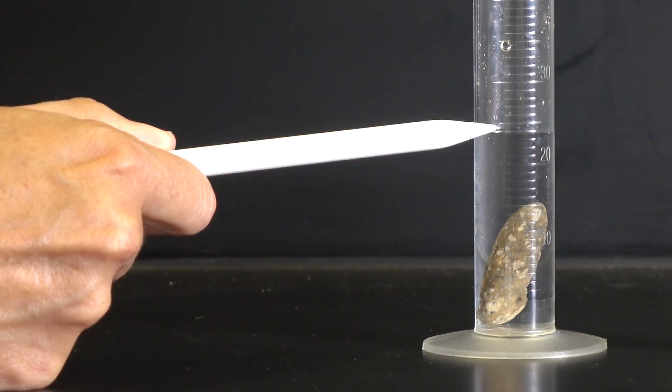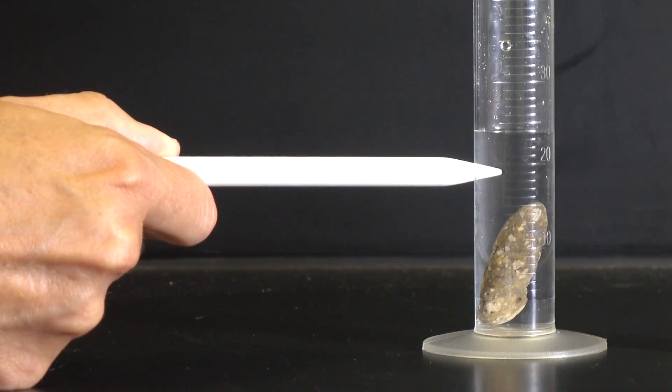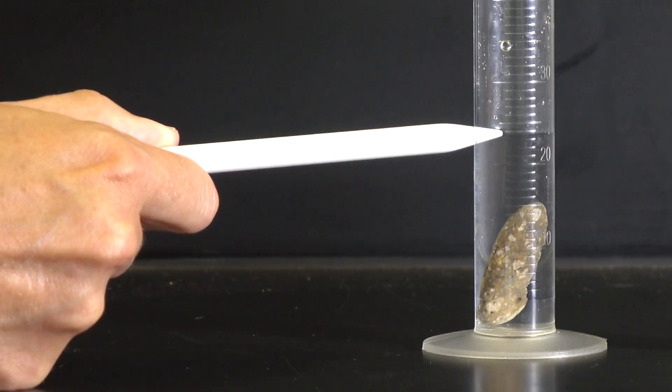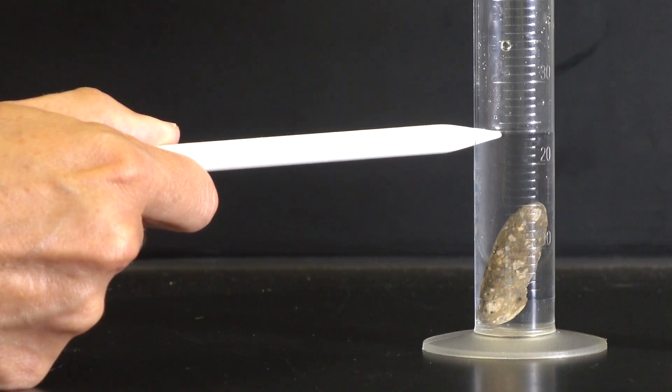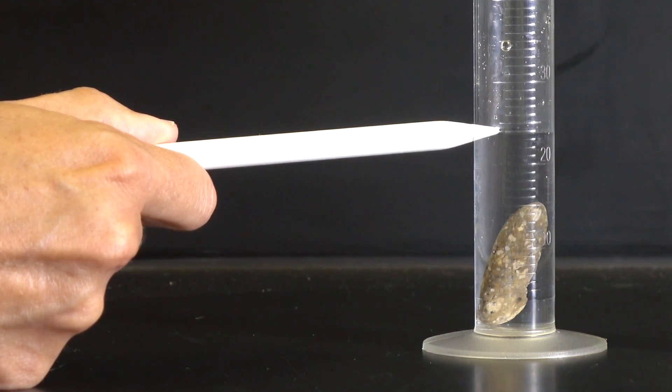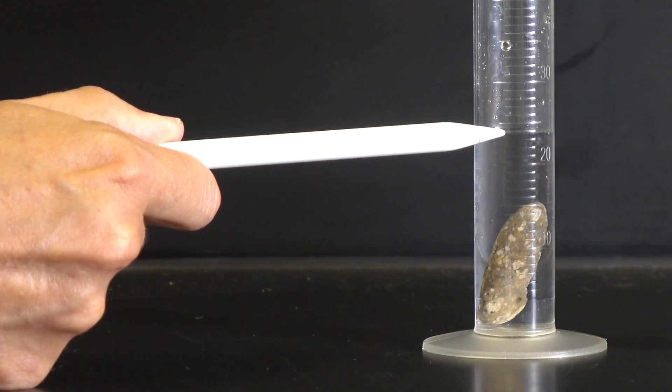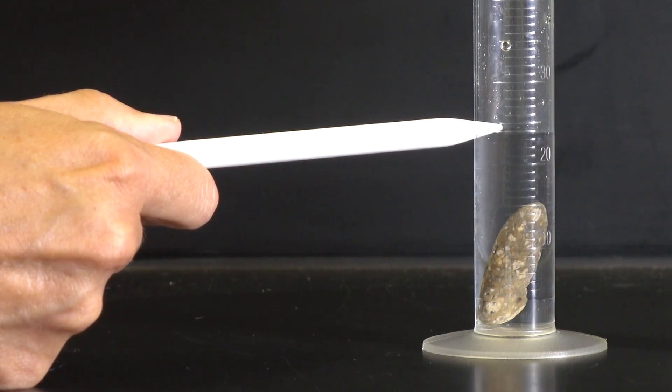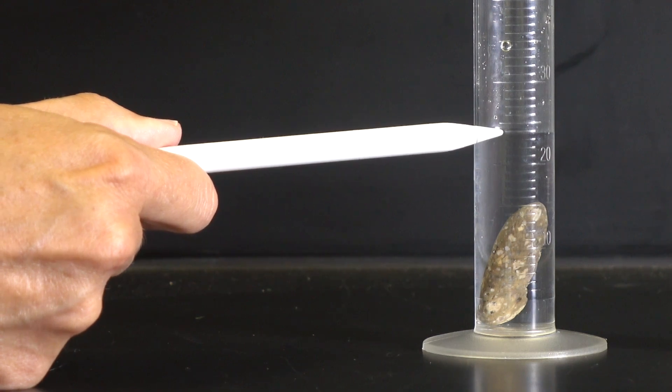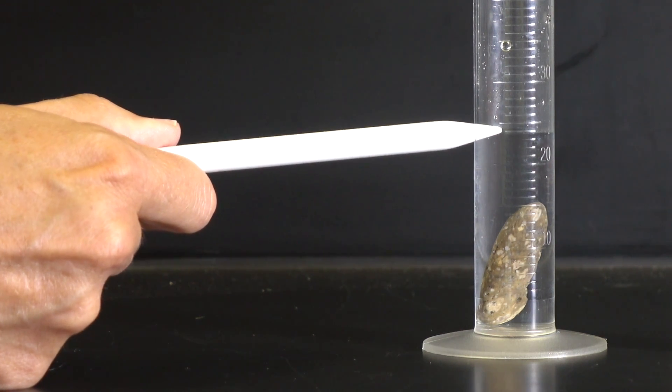Our second reading of water plus the object is therefore 23.7 milliliters. Seven because I think that the bottom of the meniscus sits on the seventh of the ten imaginary lines between 23 and 24.